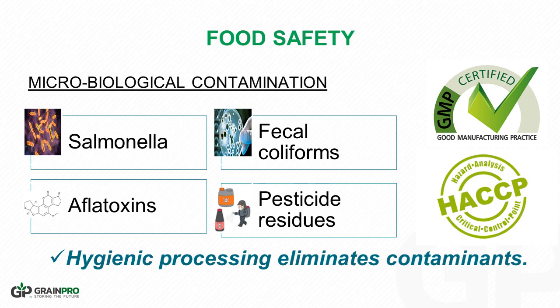Microbiological contaminants include microorganisms such as salmonella and fecal coliforms, which could come from unclean drying floors, especially when the drying area is prone to soil contact. When the drying floor is also a source of mold and fungi, there is a huge chance of aflatoxin contamination. Pesticide residue is also considered a microbiological contaminant. This microbiological agent poses harm to human and animal health. Hence, it is a must that hygienic drying be practiced.